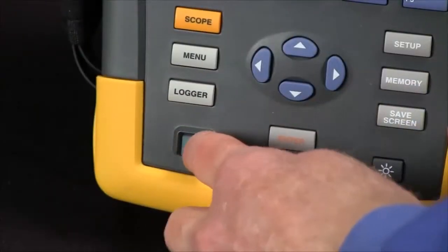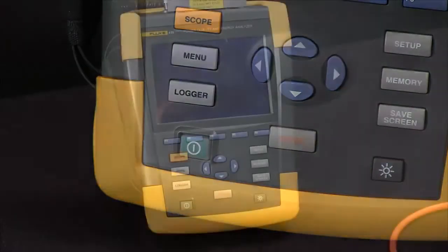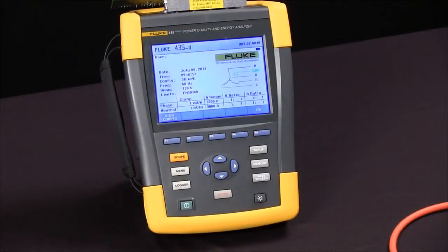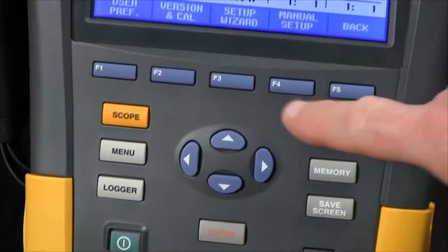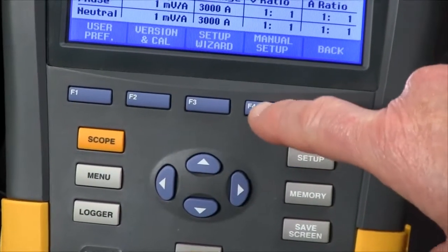In this video, we're going to show you how to turn on your Fluke 435 and configure it for the power network that you're working with. We're going to start out by hitting the setup key and then F4 for manual setup.